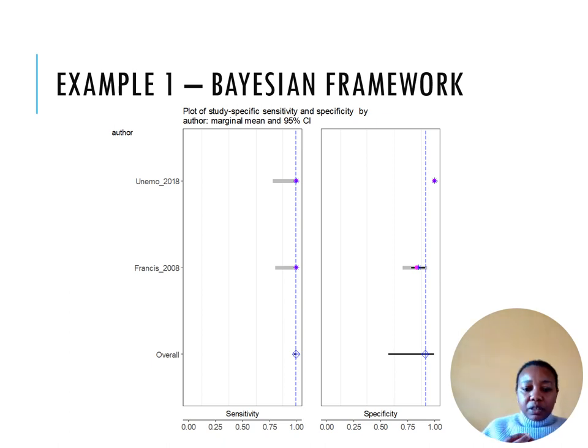From the model diagnostics, which I don't show here, and from this forest plot, this model, the FGM copula, appears to describe the central tendency of the sensitivity and specificity better.